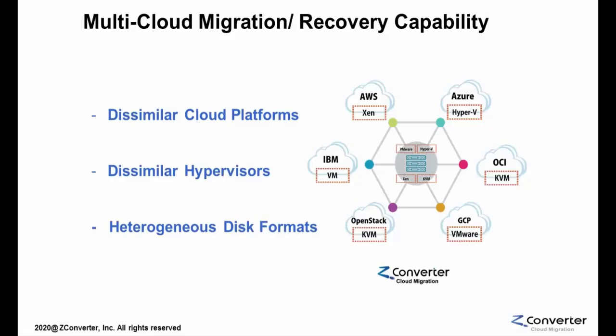Welcome to ZConverter's cloud migration SaaS introduction. I'm Austin and today I'm going to be talking about our cloud migration capabilities. This demo video will specifically cover migration from VMware to Azure. But whatever the source machine is — such as AWS, OCI, physical machine, or any other cloud virtual machine — the migration process to OpenStack by ZConverter is the same uniform process. This is just one of ZConverter's advantages.